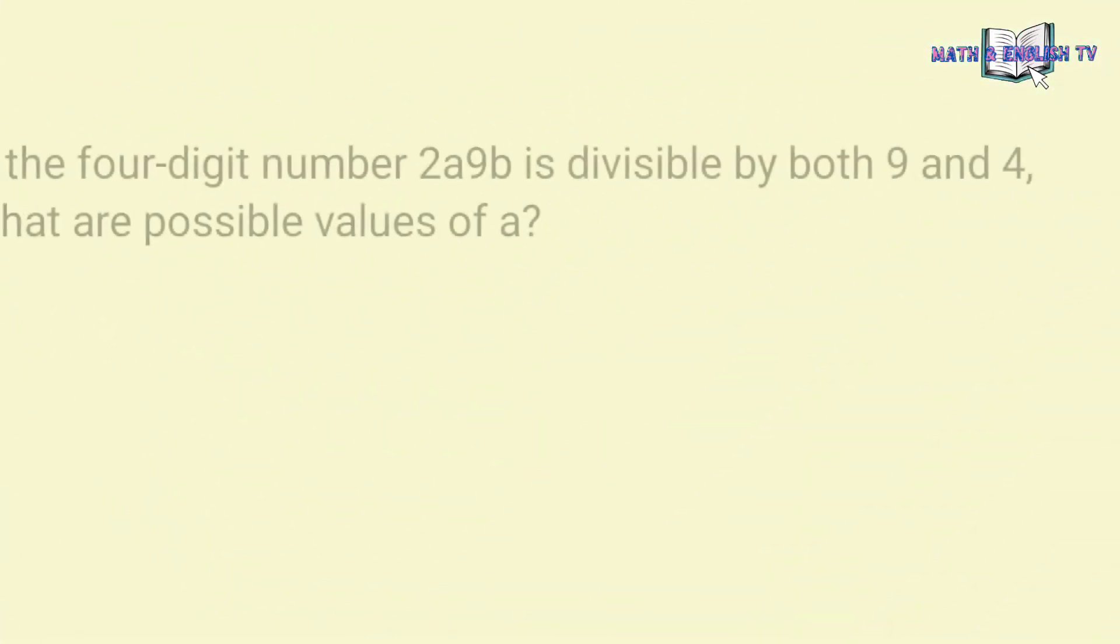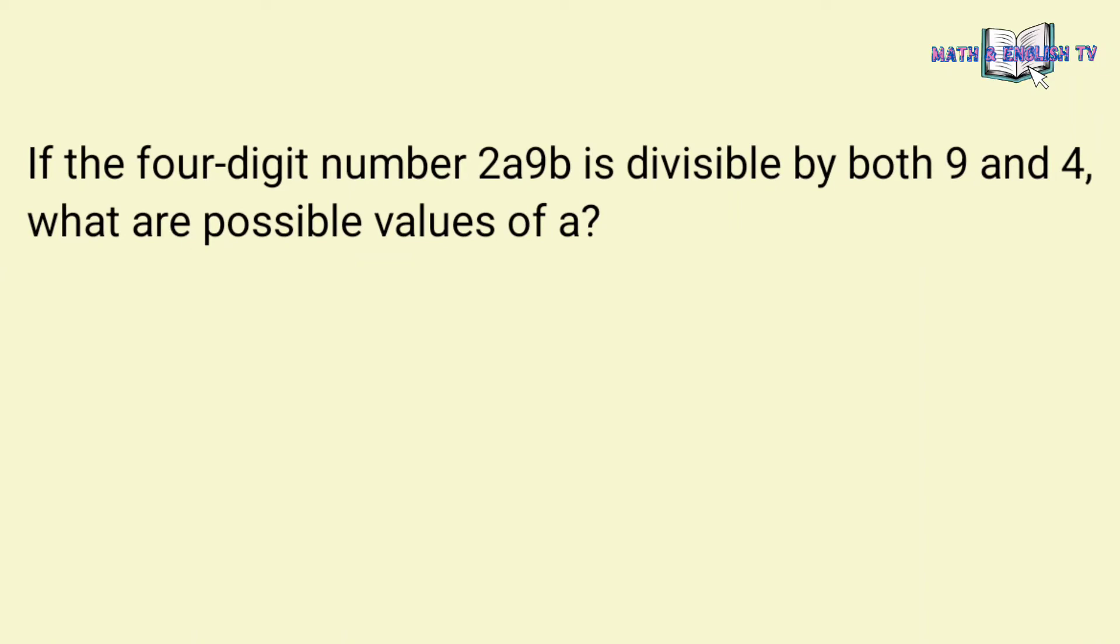Last question: if the four-digit number 2A9B is divisible by both 9 and 4, what are possible values of A? Now, apply the divisibility rules of 4 and 9 to get the correct answer.